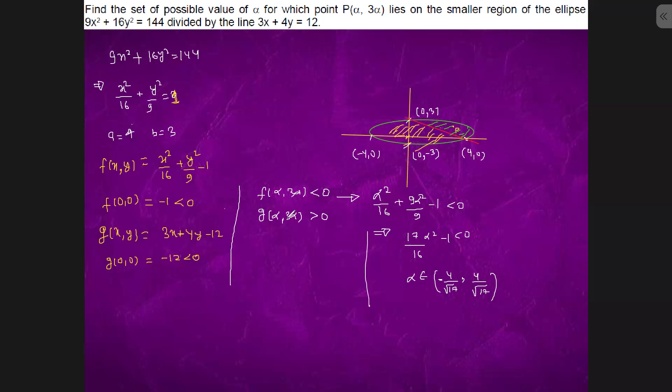Now we will proceed with g(α, 3α). So we will have this equation: 3α + 12α - 12 > 0, so α > 4/5.